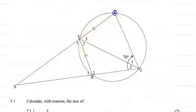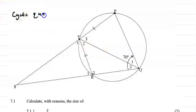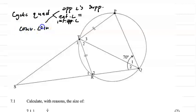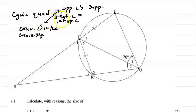There's our cyclic quadrilateral P, Q, R, and T. Now we need to know the properties of a cyclic quadrilateral. The properties are: opposite angles are supplementary, meaning they add up to 180 degrees; the exterior angle is equal to the interior opposite angle; and angles in the same segment are equal — any chord will subtend equal angles in the cyclic quad. Remember, to prove a cyclic quad, we need to prove one of these properties.